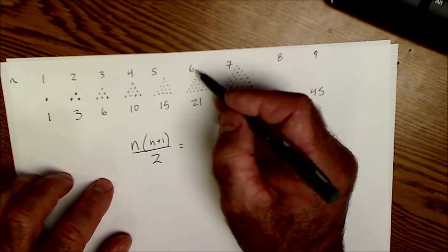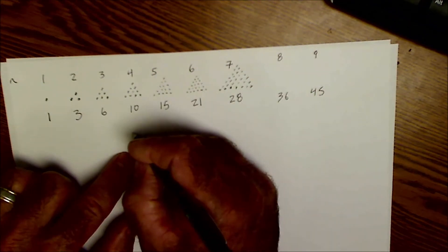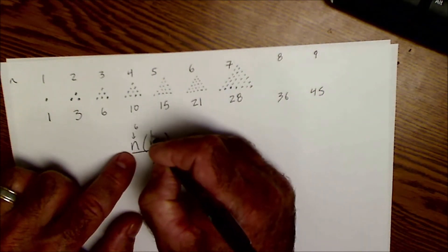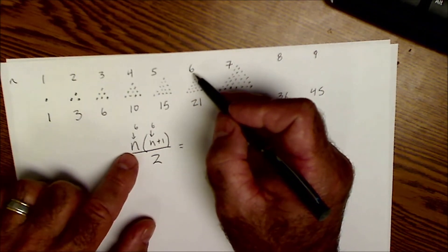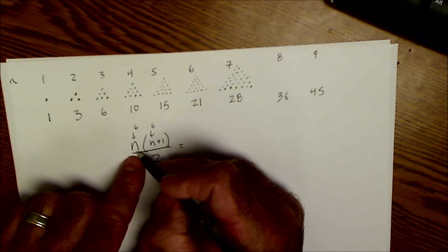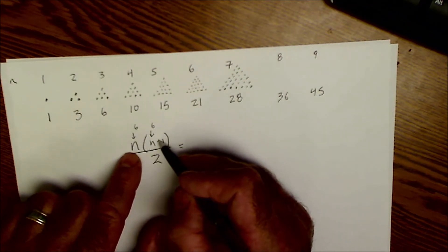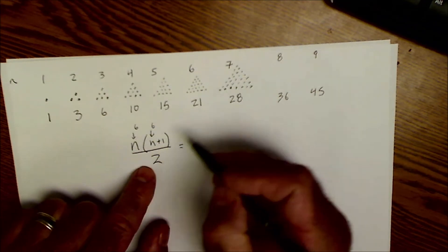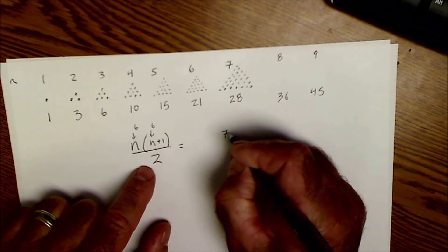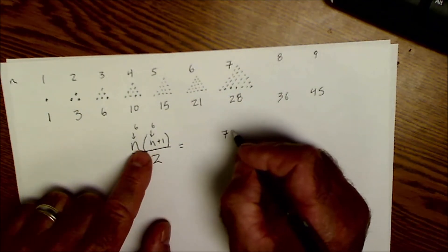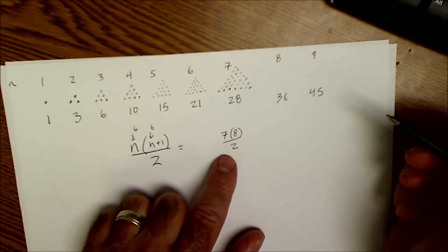So this is a number value in the sequence and then this is the output. So let's see if this works. Let's calculate the sixth term. I would take that 6, plug it in here, right? 6 would go in here. 6 would also go in here because we're talking about the sixth term in the sequence. 6 times 6 plus 1, 7. 6 times 7, 42 divided by 2 would be 21. Or in this case we'd have 7 times 8 divided by 2, 56 divided by 2 is 28.